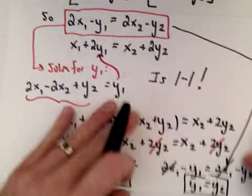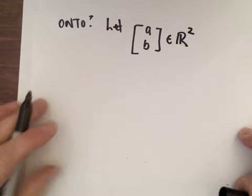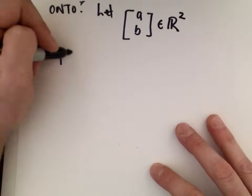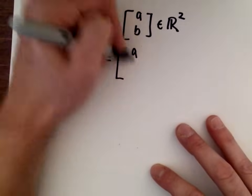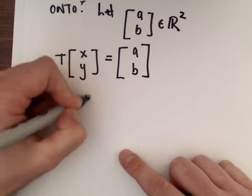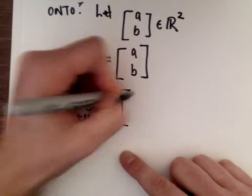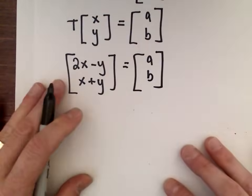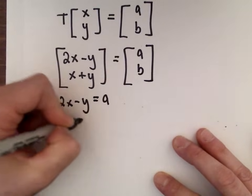Now the question is: is it onto? Take some generic vector (a, b) in ℝ². We want to find some vector (x, y) such that the transformation maps to (a, b). Under our transformation, we have 2x - y = a and x + y = b, setting up a system of equations.